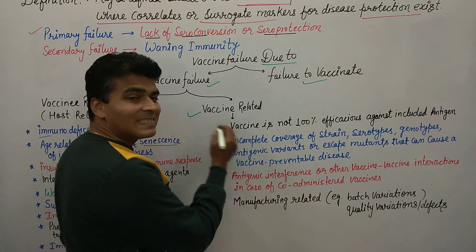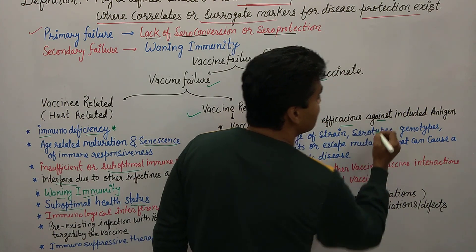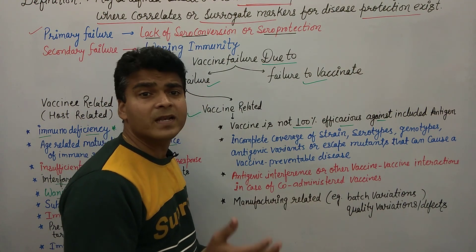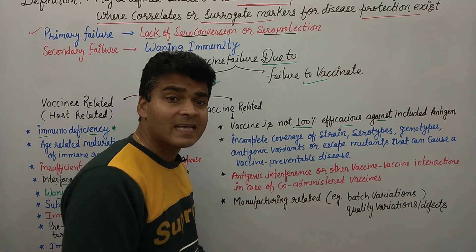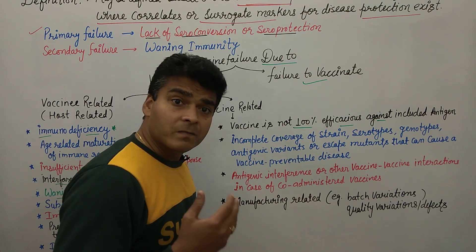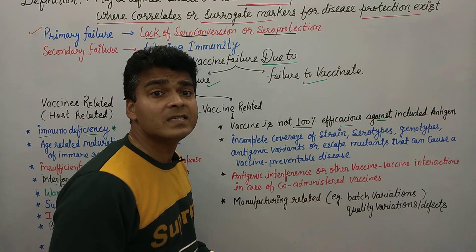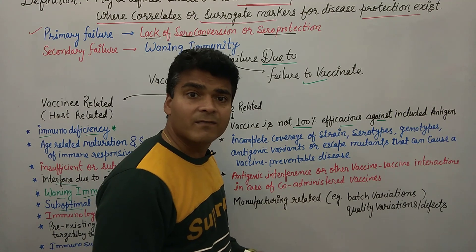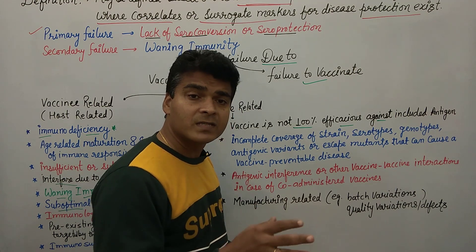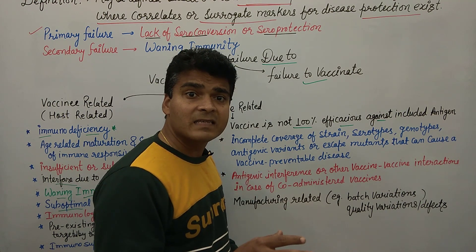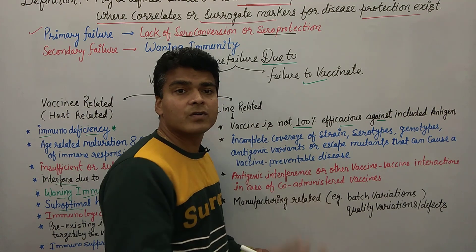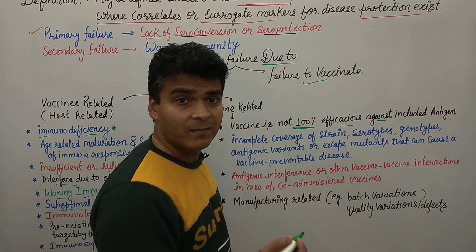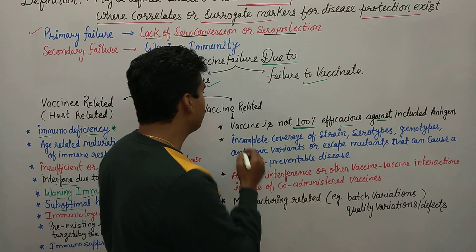Now let's look at the vaccine-related factors. The vaccine is not one hundred percent efficacious against the included antigen. Remember that it is not necessary that any vaccine is hundred percent efficacious — meaning after giving the vaccine, it is not guaranteed to be hundred percent effective against the disease it was given for. For example, some children who received the chickenpox vaccine still got chickenpox or smallpox again.